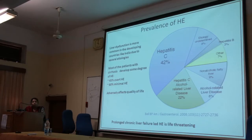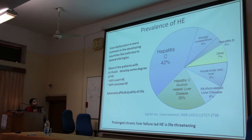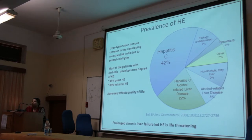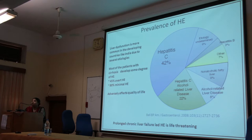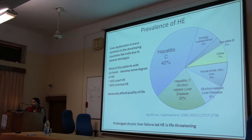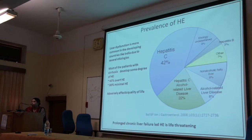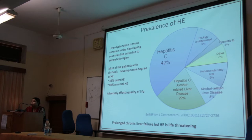Among patients with cirrhosis, 45 percent have overt HE and 80 percent actually suffer from minimal HE — which underlines the importance of why minimal hepatic encephalopathy is of great concern.